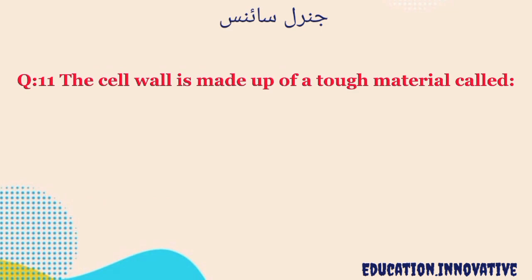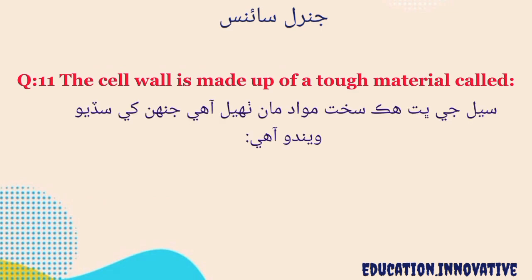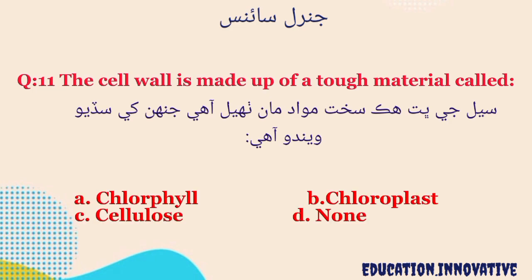Question number 11. The cell wall is made up of a tough material called — the correct answer is cellulose.